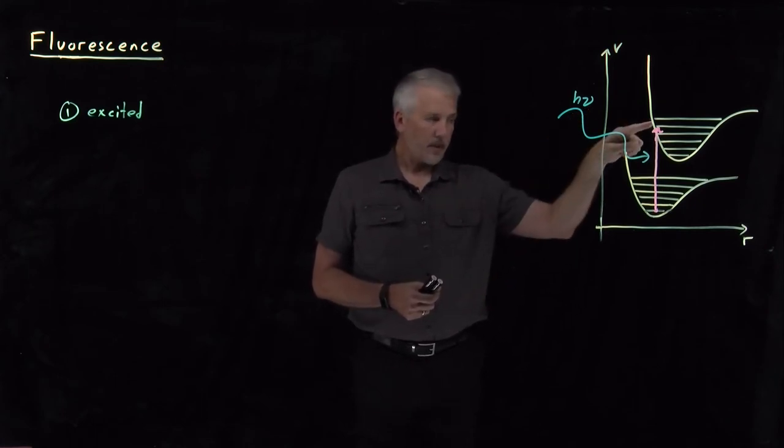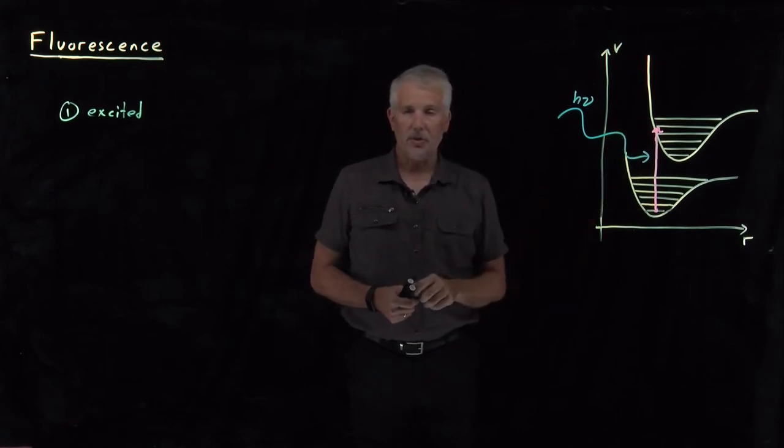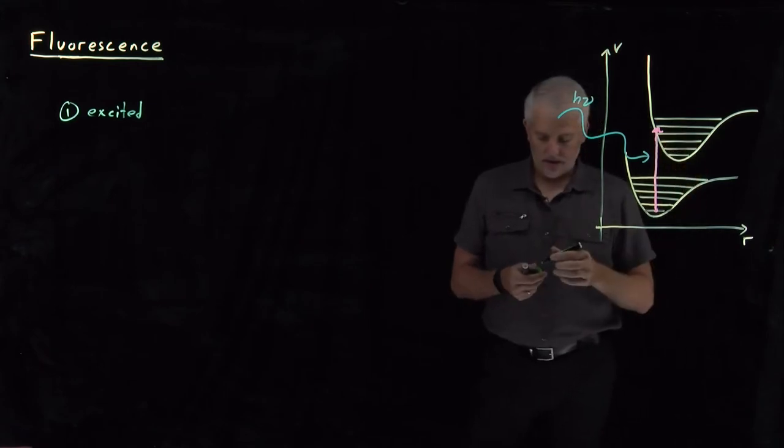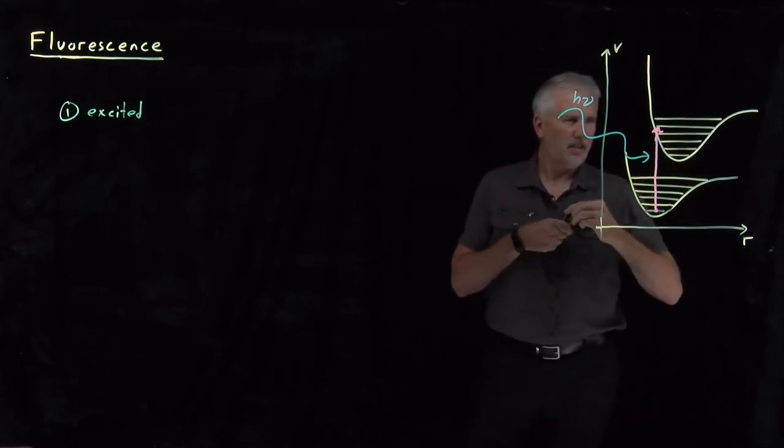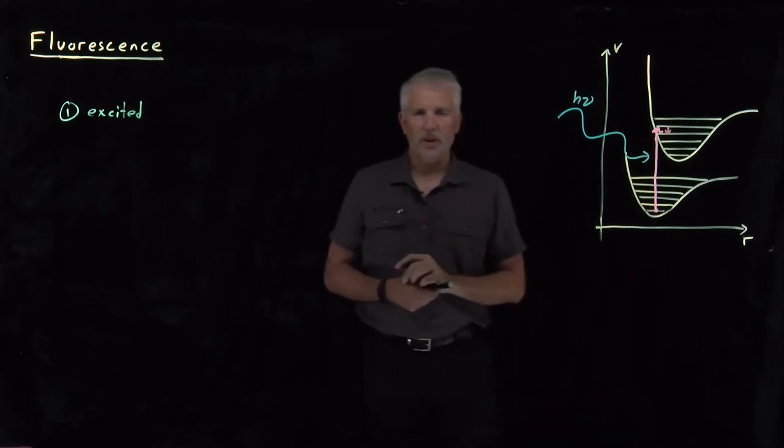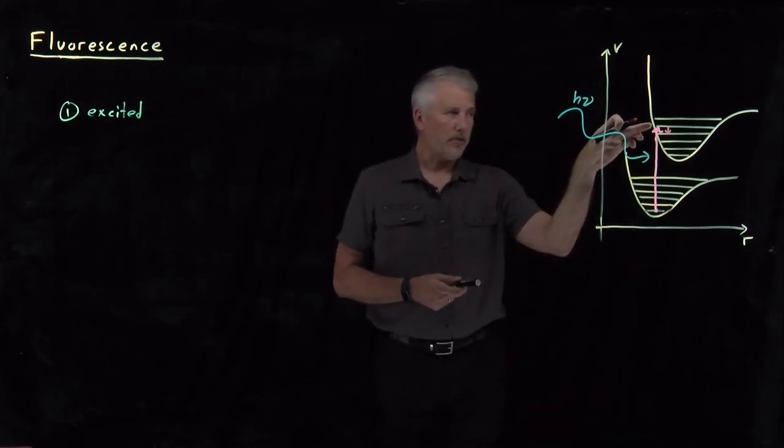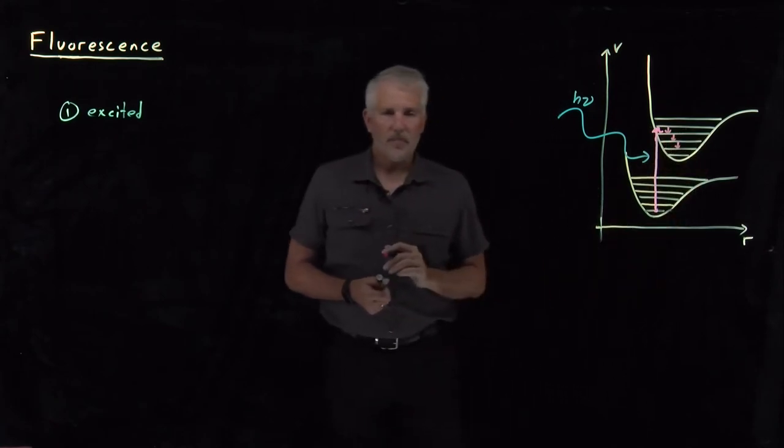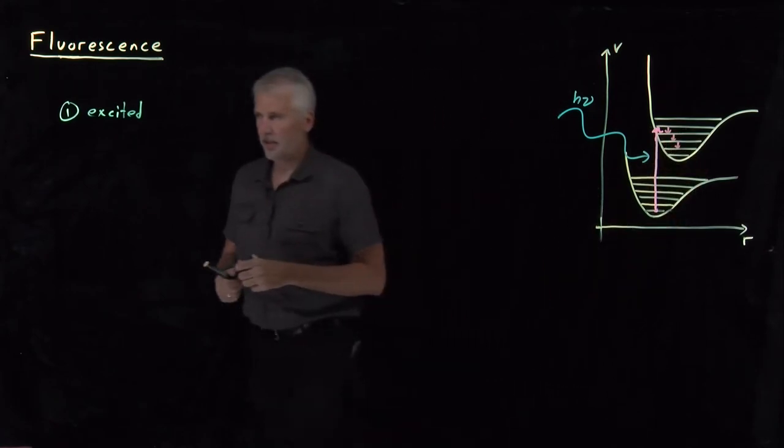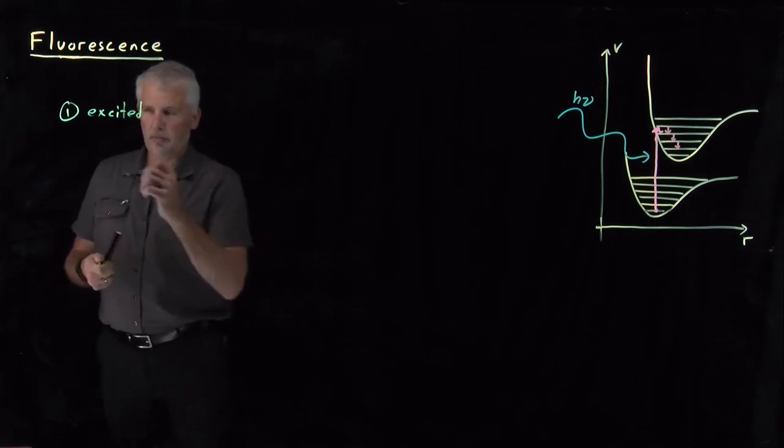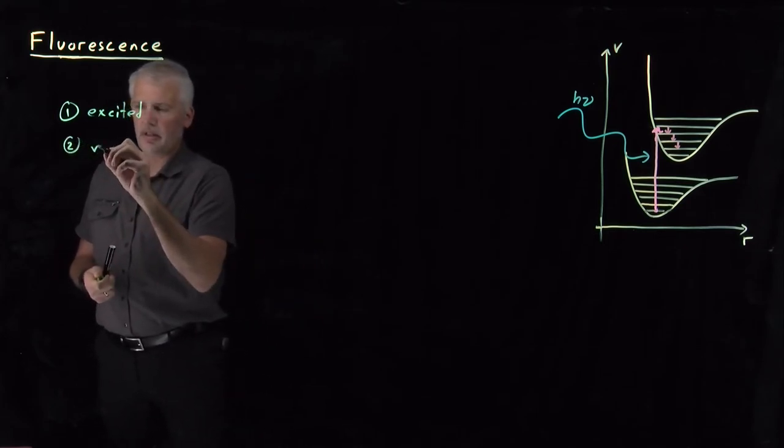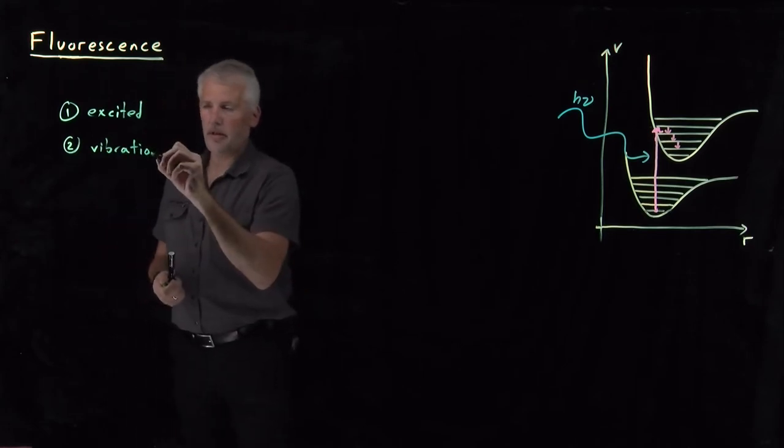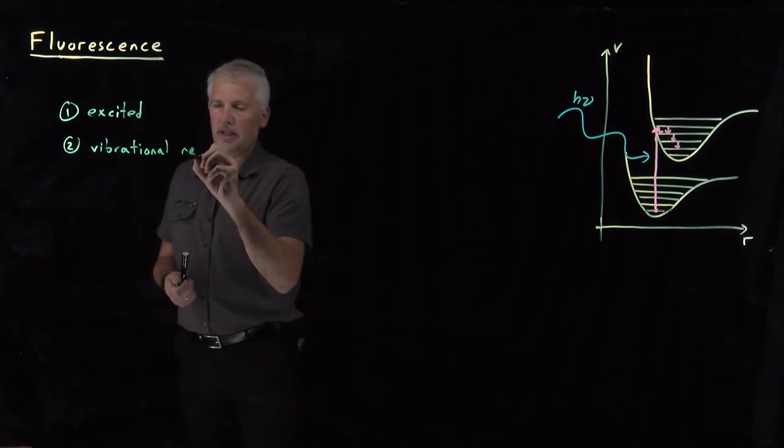But because that emission process usually takes longer than another process, if it falls down a vibrational level, so from this vibrational level falls down to this vibrational level, perhaps down another one or two vibrational levels, that process is called vibrational relaxation, and that actually happens more quickly than falling back down to the lower electronic state. So that vibrational relaxation is faster than the electronic relaxation.